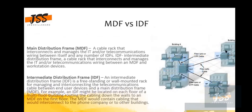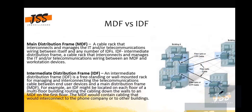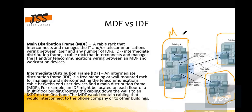MDF and IDF — we have one main building and then other campuses. This is the main campus and these are sub-campuses. They want connectivity all the way, so they will install one MDF here, which is the Main Distribution Frame, connected to IDFs — Intermediate Distribution Frames. This campus can communicate with another through the MDF.